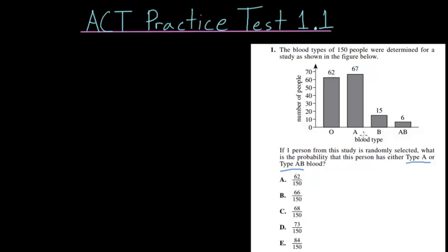Let's take a closer look at type A here and type AB here, where type A there are 67 people with that and there are only six people with type AB.